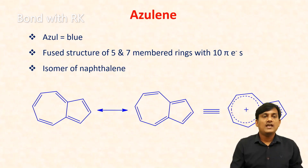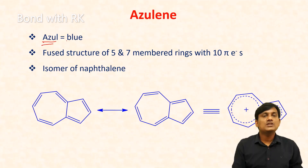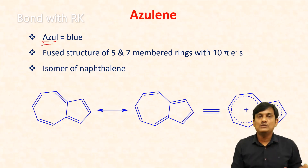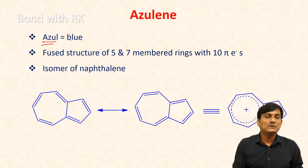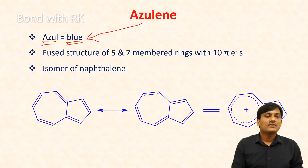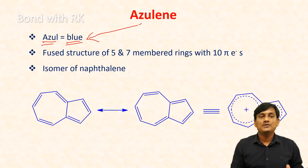Azulene is originated from the term 'azure.' The literal meaning of azure is blue, and the color of azulene is blue. That is why it is originated from the word azure.